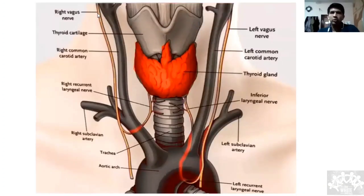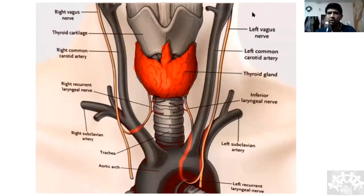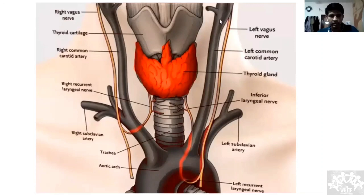Coming to something repeatedly asked in exams. Why is it called the recurrent laryngeal nerve? Because it takes a loop — it crosses downward and goes back up. The nerve origin is in the neck as a branch from the vagus nerve, but because of anatomical embryological development it goes all the way down and then comes back up.